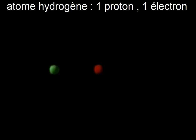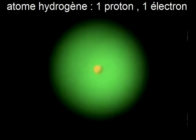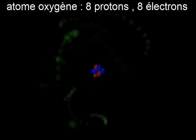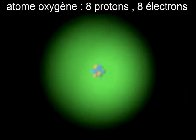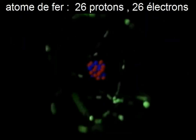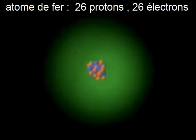Each type of atom is identified by the number of protons and electrons it has. A hydrogen atom has just one proton and one electron. An oxygen atom has eight protons and eight electrons. An iron atom has 26 protons and 26 electrons.